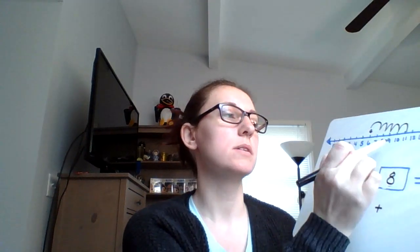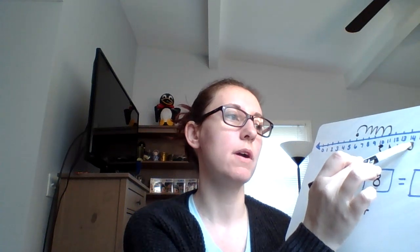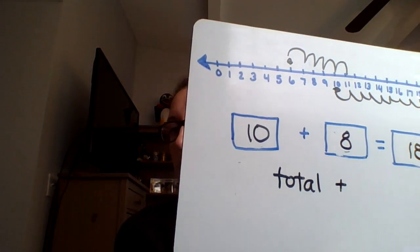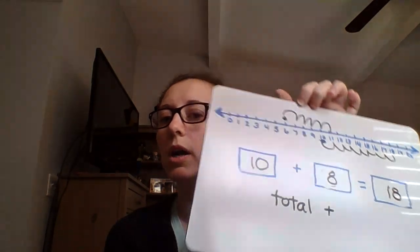Ten plus eight: start at ten and move eight spaces — one, two, three, four, five, six, seven, eight — and we end at eighteen. Now I want you to be careful when you're doing your skips because if you get too sloppy it's hard to see what number you're pointing to. So take your time, make sure you're pointing to the correct number, and you won't be confused and you won't make careless mistakes. A careless mistake is when you're rushing and not taking your time to get it correct.